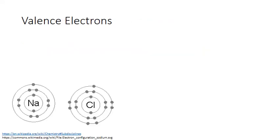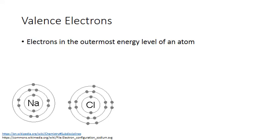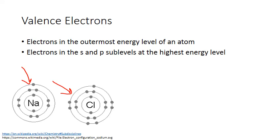Let's review what valence electrons are. These are the electrons in the outermost energy level of an atom. Using the Bohr model, this can be viewed as the electrons in the outermost ring — so that's one valence electron on that outer ring for sodium and seven for chlorine. We can also define this in terms of the quantum mechanical model as the electrons in the highest occupied S and P sublevels of the atom.